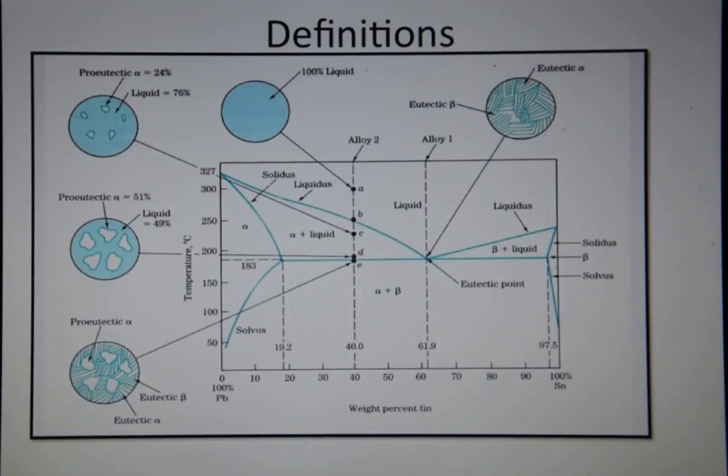So a couple of definitions. This line here, that's the solidus line and in this case we have the alpha which is the solid solution rich in lead and it's got some tin dissolved in it.